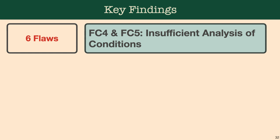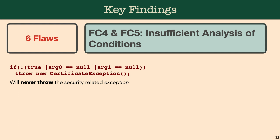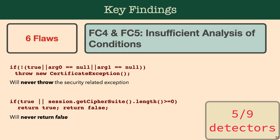Furthermore, for flaw class four and five, it's about insufficient analysis of conditions. Sometimes in security-specific APIs we have to define behavior such as hostname verification or certificate validation. We noticed that for incorrect conditions or infeasible conditions, they are not properly being analyzed by these cryptodetectors, even though they can be statically computed. This affected five out of the nine cryptodetectors.